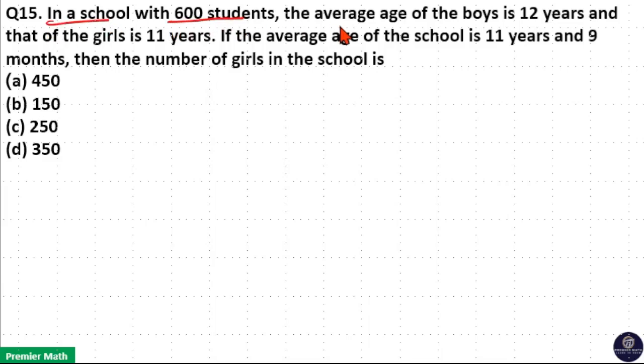In a school with 600 students, the average age of the boys is 12 years and that of girls is 11 years. If the average age of the school is 11 years and 9 months, then the number of girls in the school is.